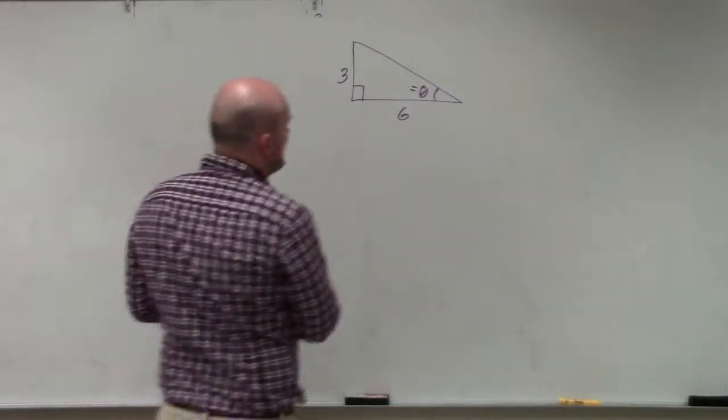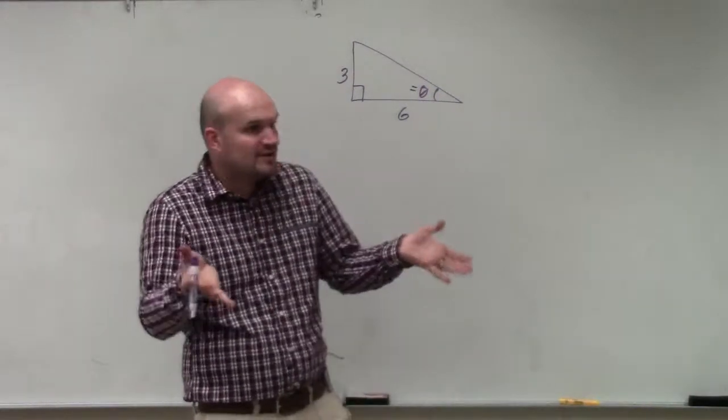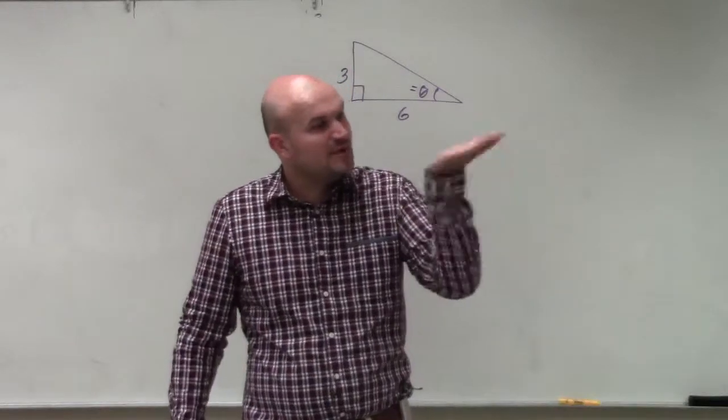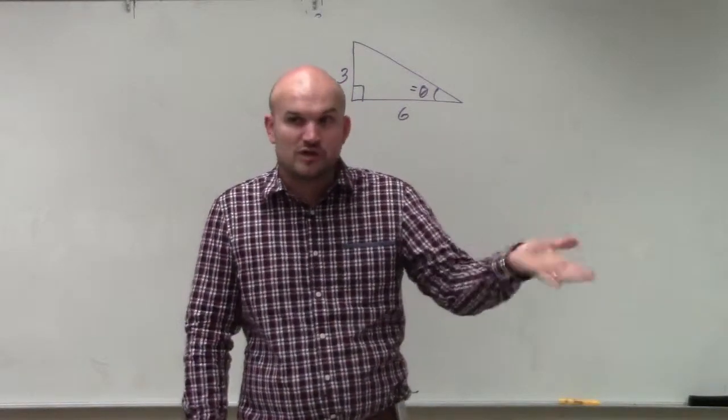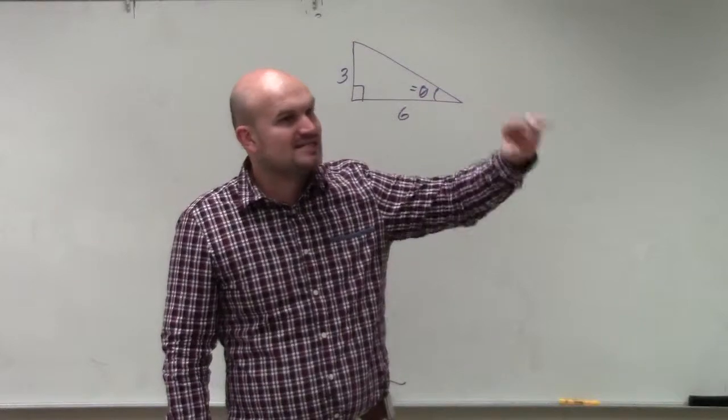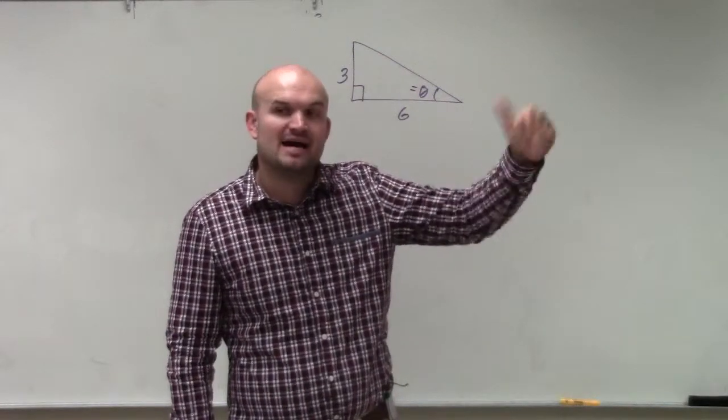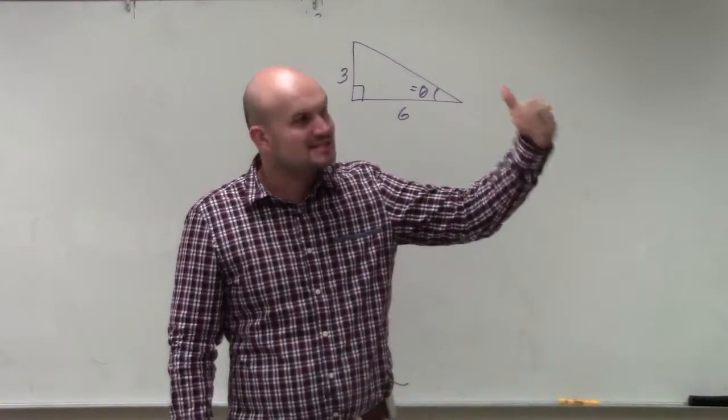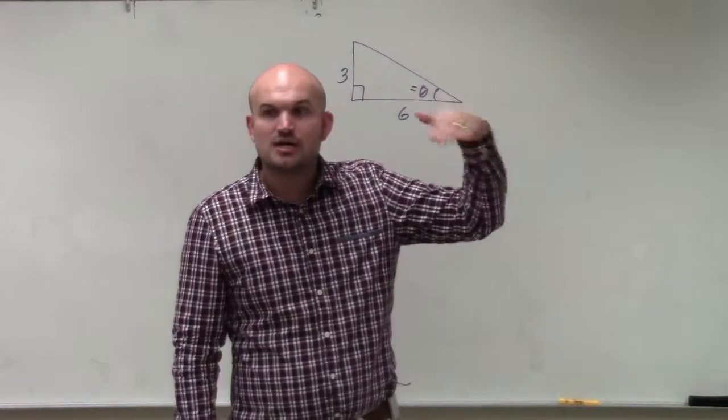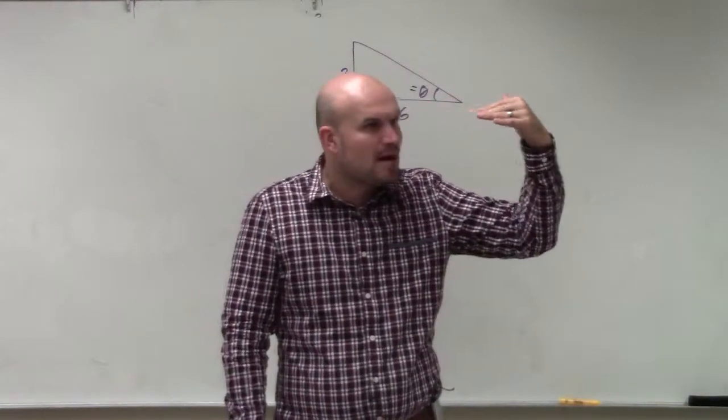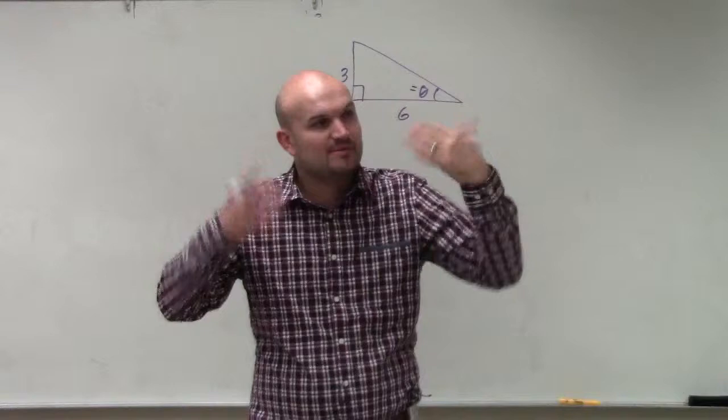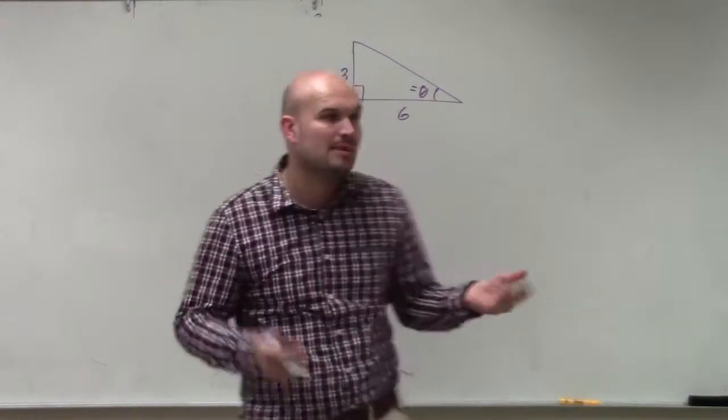And so in this example, again, the first important thing, the main important thing, is just like we did before, we have to identify which trigonometric function we deal with. Remember, sine represents opposite over hypotenuse, cosine adjacent over hypotenuse, tangent opposite over adjacent. So before we get to what type of problem we need to use, we need to make sure we identify what information we're given in the problem.